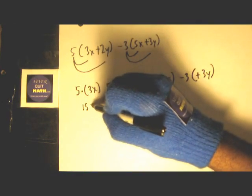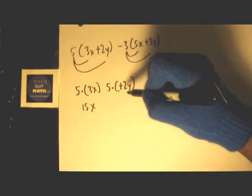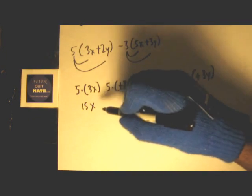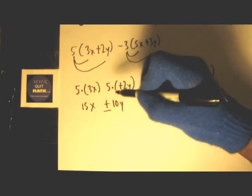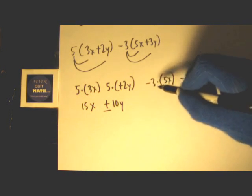So 5 times 3 is gonna be 15X. 5 times 2 here is gonna be +10Y. Make sure you put that plus - very important to put that +10Y.